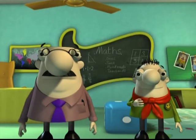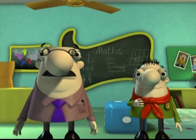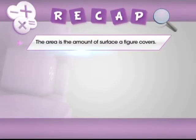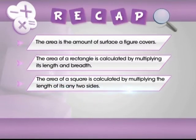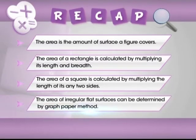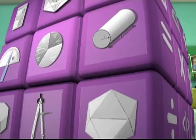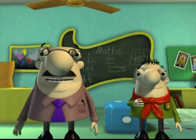And now we get to revise! Yes! So here is a quick recap. In this module, you have learnt the following. The area is the amount of surface a figure covers. The area of a rectangle is calculated by multiplying its length and breadth. The area of a square is calculated by multiplying the length of its any two sides. The area of irregular flat surfaces can be determined by graph paper method. Well, we will take your leave now to prepare for another fun-filled episode with numbers. Till then, you all take care and be good!